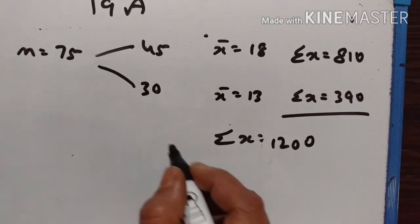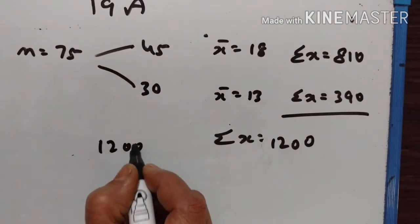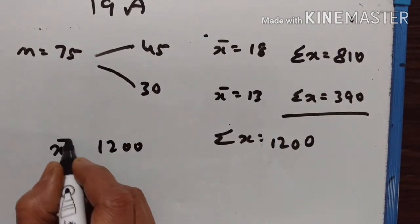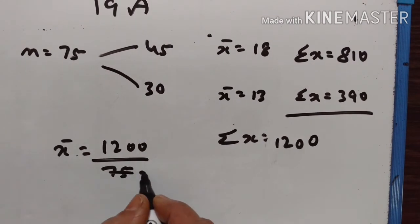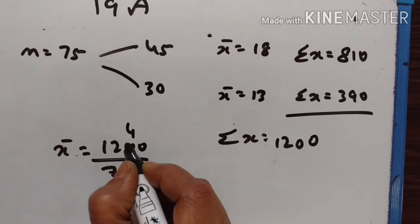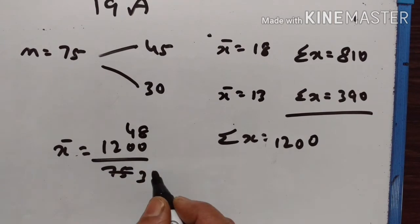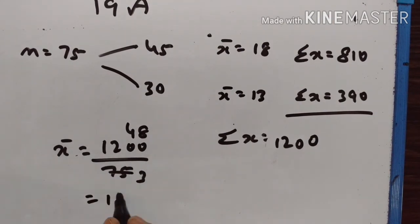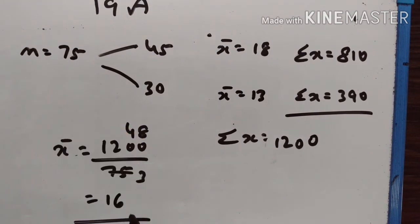Total sum is 1200. n is equal to 75. Therefore the mean is 1200 divided by 75, which equals 16. So the mean of 75 numbers is equal to 16.